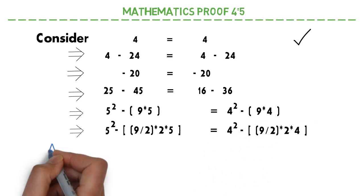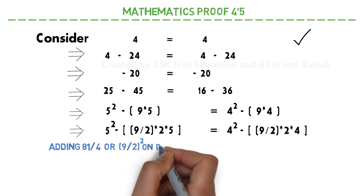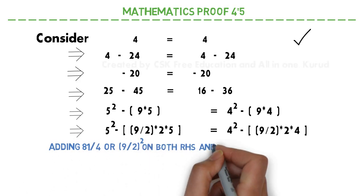Now I am trying to add 81 by 4, which is equal to 9 by 2 whole square, on both the sides. That means left hand side and right hand side.